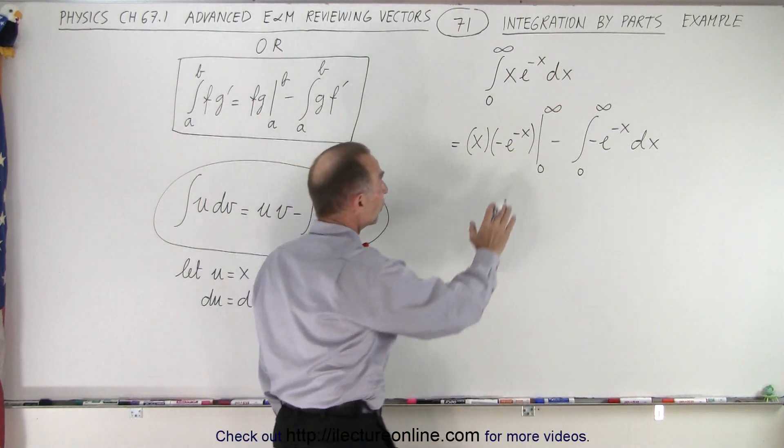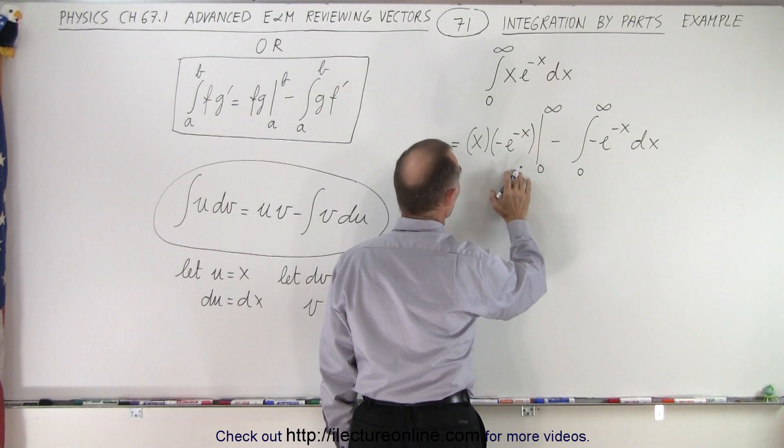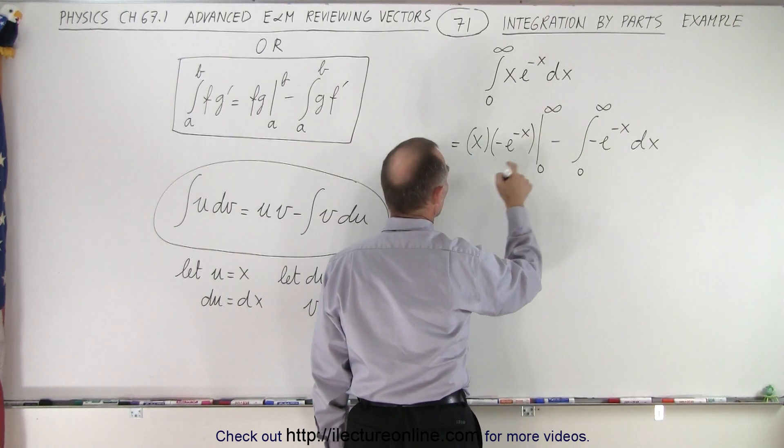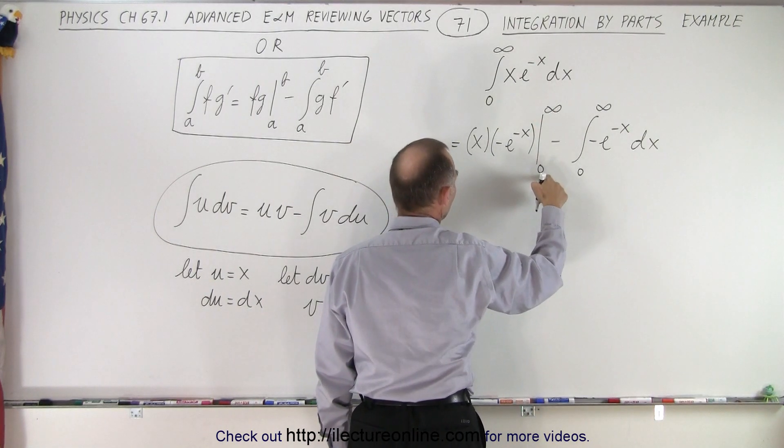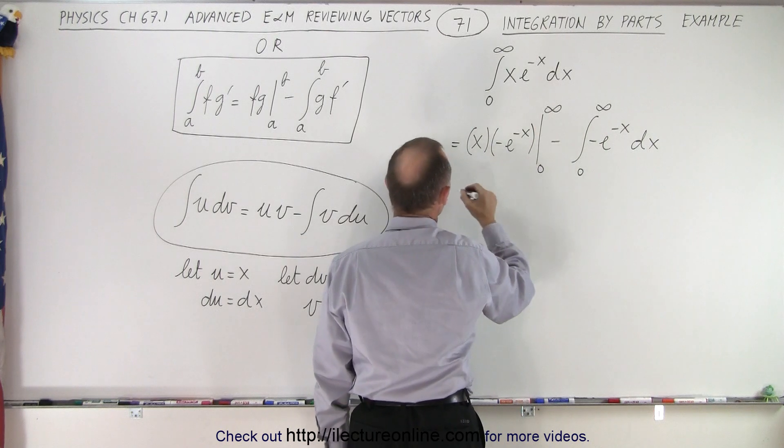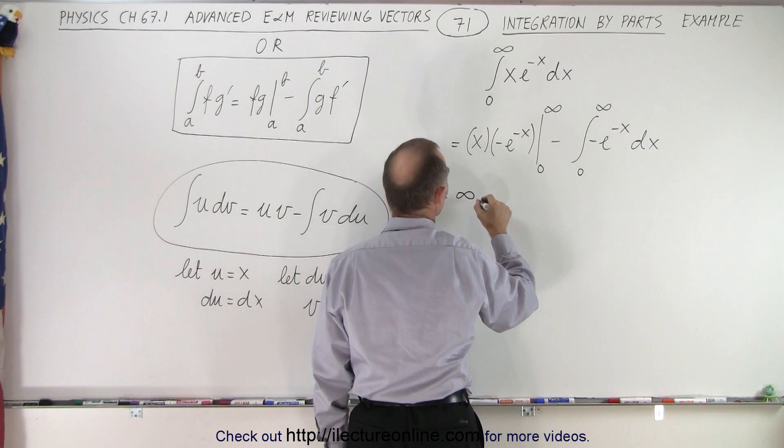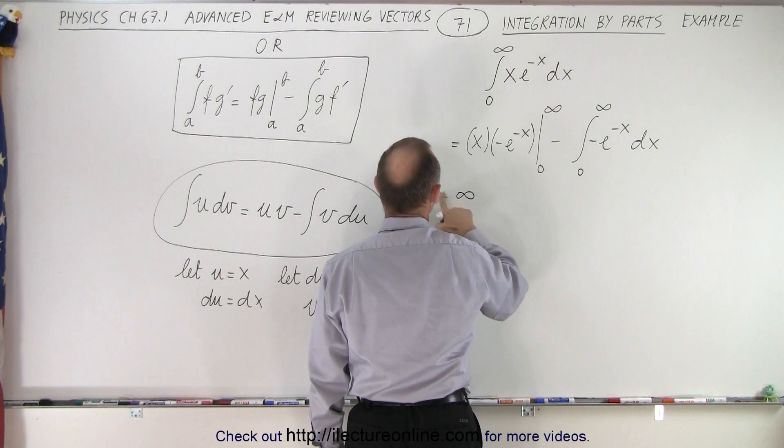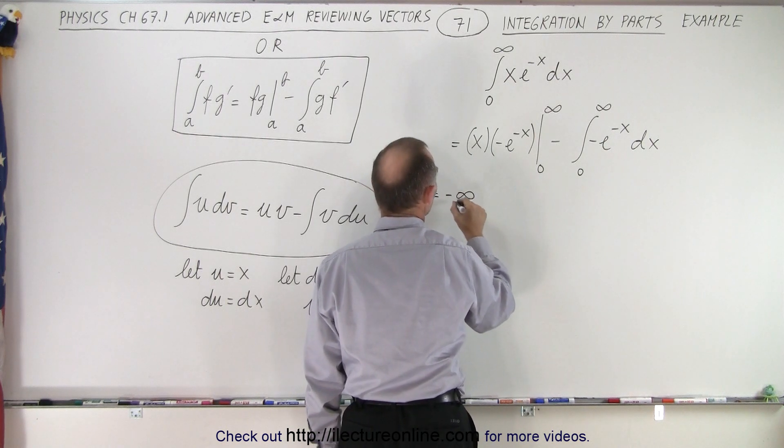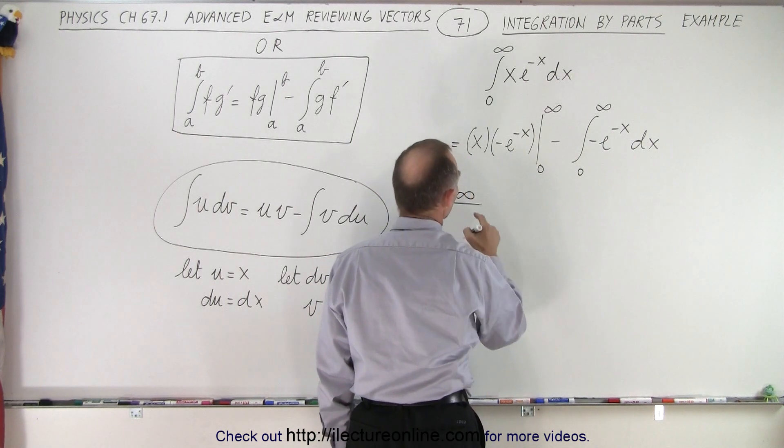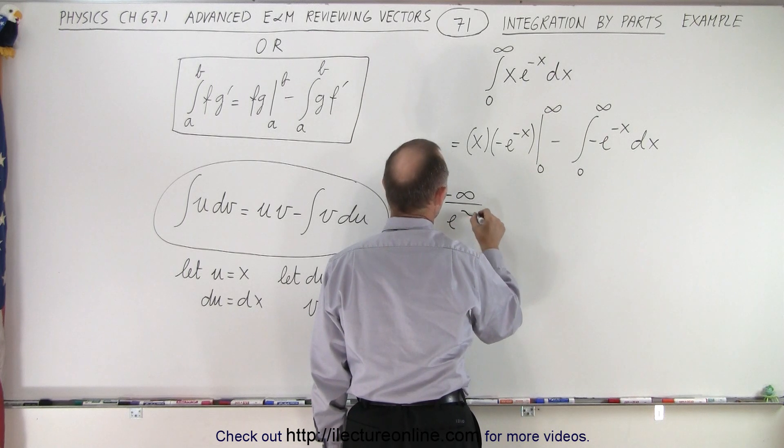Now we do need to evaluate this. So what happens when we plug in the top value, when we plug in the top limit and then the bottom limit, we get the following. We get infinity times a minus sign. So let's write this as a minus infinity divided by e to the infinity, when we plug in the upper limit.